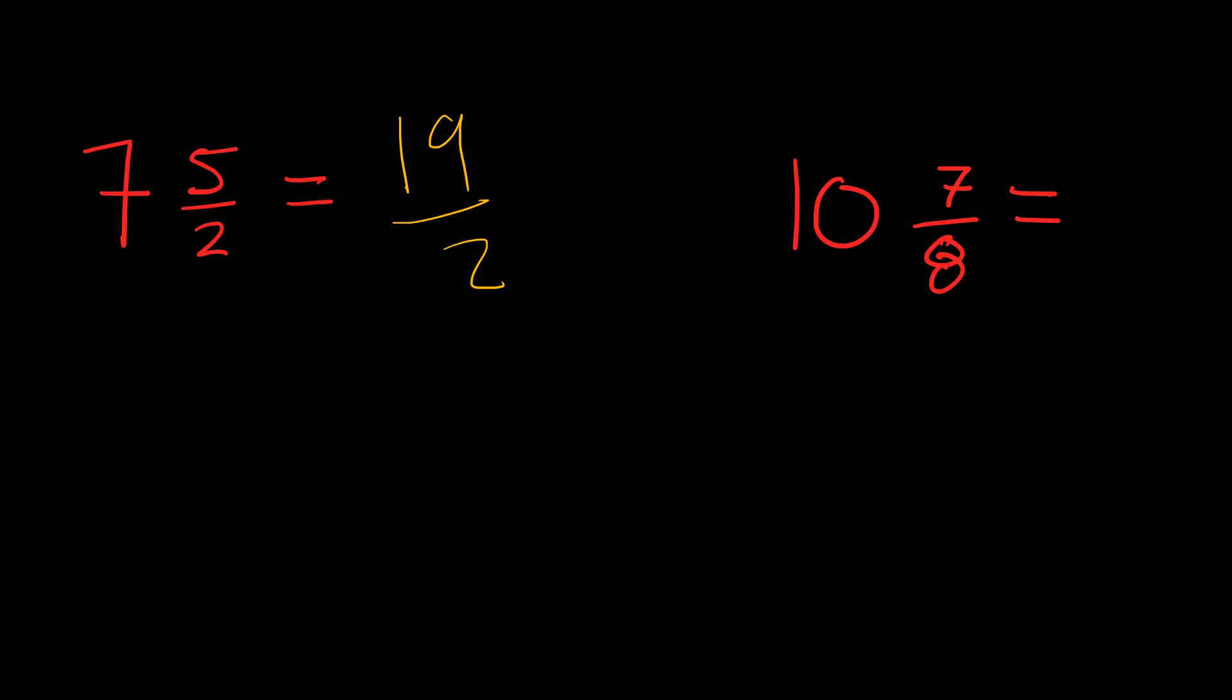Now we have 10 and seven-eighths. We do eight times 10, which is 80, plus seven is 87. We have 87 over eight.